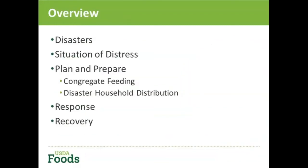What we're looking at today is an overview of disasters. We're going to talk about situations of distress, how to plan and prepare for both congregate and disaster household distribution — which I'll be referring to as DHD — the response process, and then the recovery and end of the process. Every situation or disaster could be very different, and USDA has flexibilities built in so we can effectively meet your state and local feeding needs.